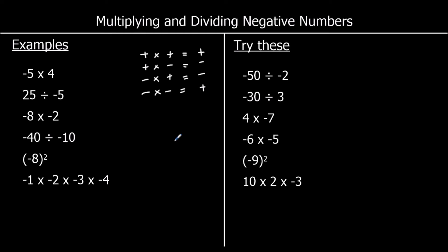Let's look at these examples. The first one is a negative times a positive, so it's going to be a negative answer, and 5 times 4 is 20, so we have negative 20. The second one is a positive divided by a negative — again a negative answer — and 25 divided by 5 is 5, so the answer is negative 5. The third one is a negative times a negative, so a positive. 8 times 2 is 16.